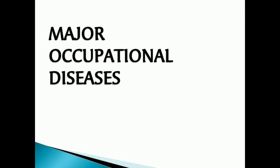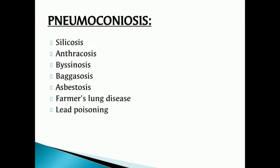Major occupational diseases: pneumoconiosis types include silicosis, anthracosis, bacinosis (byssinosis), bagassosis, asbestosis, farmer's lung disease, and lead poisoning.